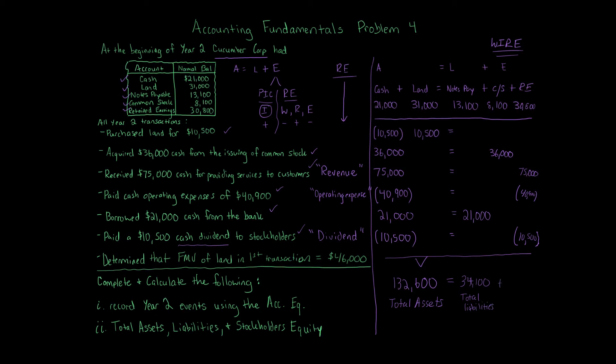Then we add together the Common Stock beginning balance plus transactions, and also the Retained Earnings transactions, to get total stockholders' equity of $98,500. We can check our work using the accounting equation: Assets = Liabilities + Equity, which is $132,600 = $34,100 + $98,500.